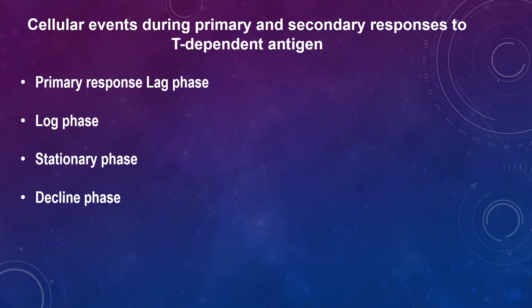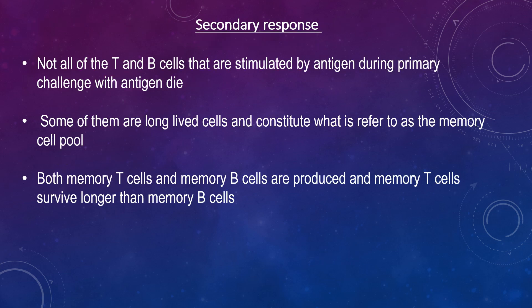Furthermore, plasma cells begin to die. When the rate of antibody synthesis equals the rate of antibody decay, the stationary phase is reached. For the decline phase, when no new antibody is produced because the antigen is no longer present to activate T and B cells, the residual antibody is slowly degraded and the decay phase is reached. Not all of the T and B cells stimulated by antigen during the primary challenge die; some are long-lived cells that constitute what is referred to as the memory cell pool. Both memory T cells and memory B cells are produced, and memory T cells survive longer than memory B cells.